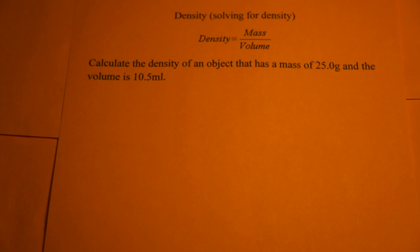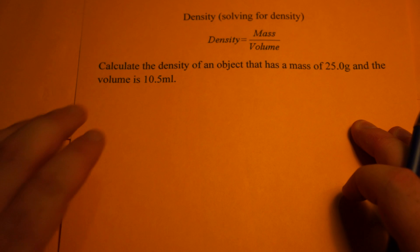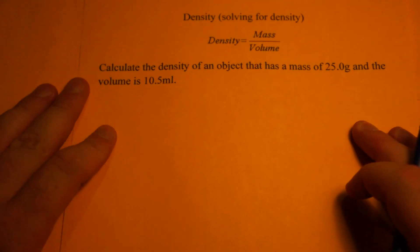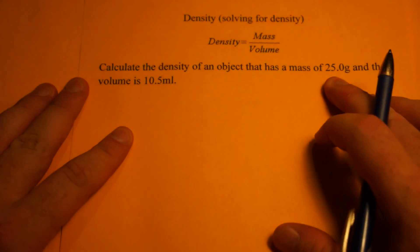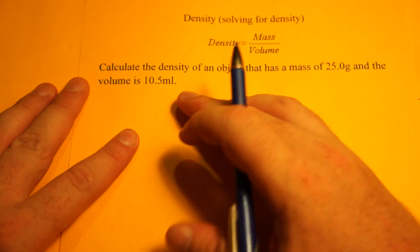In this video I'm going to show you how to solve for density using a density equation. Calculate the density of an object that has a mass of 25 grams and a volume of 10.5 milliliters.